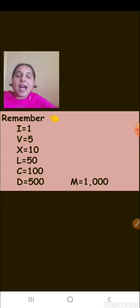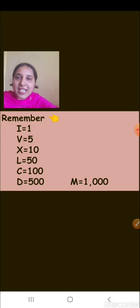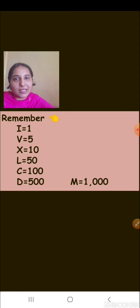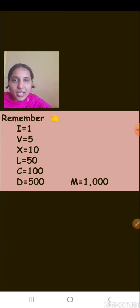I stands for 1, V stands for 5, X stands for 10, L stands for 50, C stands for 100, D stands for 500, and M stands for 1000. These are the 7 letters which represent the Roman numerals, and all of them have different values.